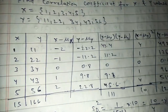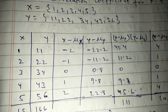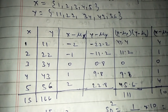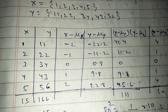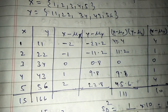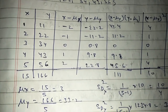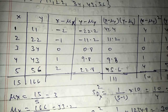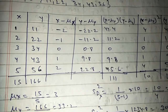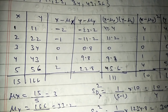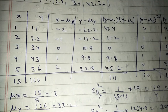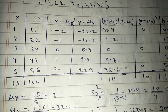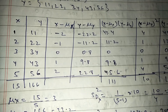Here, x minus μx: μx equals 3. So: 1 minus 3 = -2, 2 minus 3 = -1, 3 minus 3 = 0, 4 minus 3 = 1, 5 minus 3 = 2. Similarly for y minus μy where μy = 33.2: 11 minus 33.2 = -22.2, 22 minus 33.2 = -11.2, 34 minus 33.2 = 0.8, 43 minus 33.2 = 9.8, 56 minus 33.2 = 22.8.